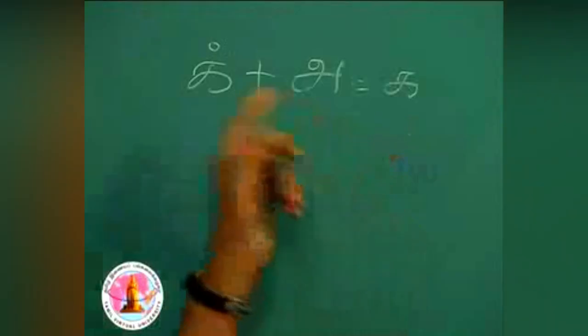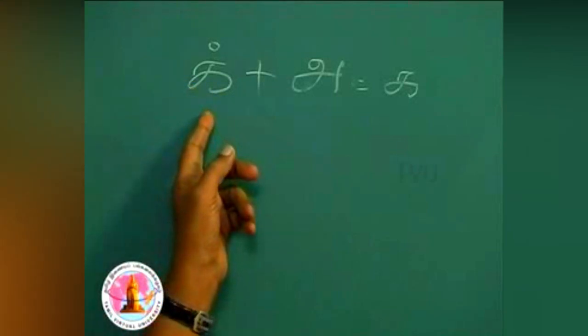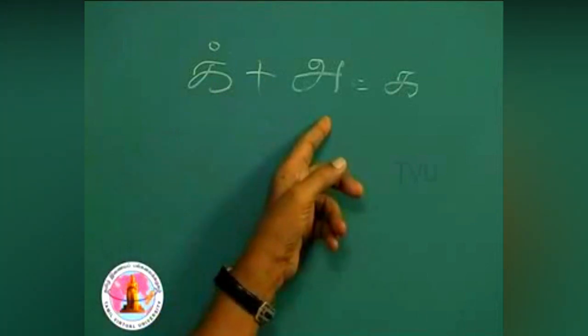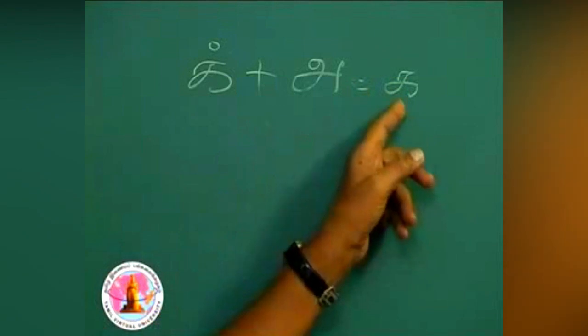There are 12 vowels and 18 consonants, and in combination we get consonants. That is to say, if a consonant plus a vowel, the result is ka, a consonant vowel.